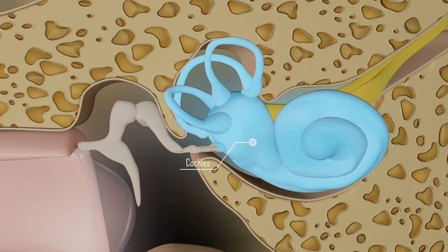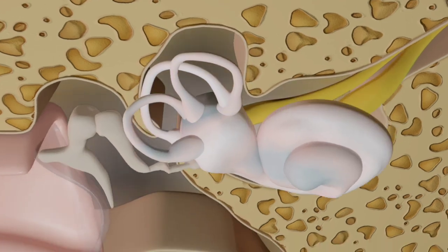Nearby is the cochlea, which is a hollow-shaped bone that plays a key role in our sense of hearing. And right next door, we have the vestibule and the semicircular canals. These organs have a lot to do with the involvement of our equilibrium.